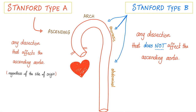That's why I'm a big fan of the Stanford classification of aortic dissection — because they said, let's be clinically relevant. A problem in the ascending aorta is a freaking emergency. Why? Because it can lead to coronary artery problems, ischemia, infarction, and death. However, a problem in the arch or the descending aorta is still bad, but it's not an emergency like that one — at least not always.